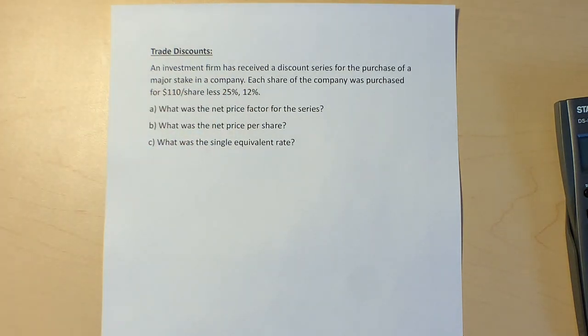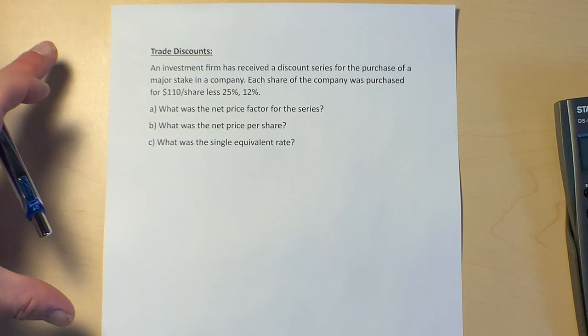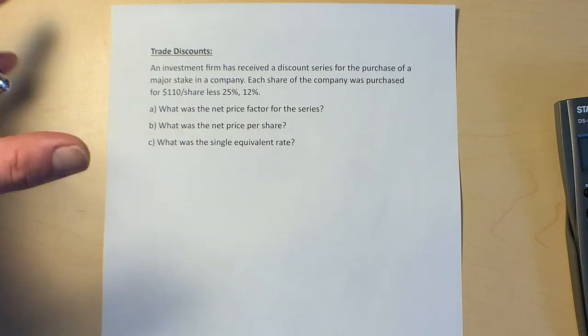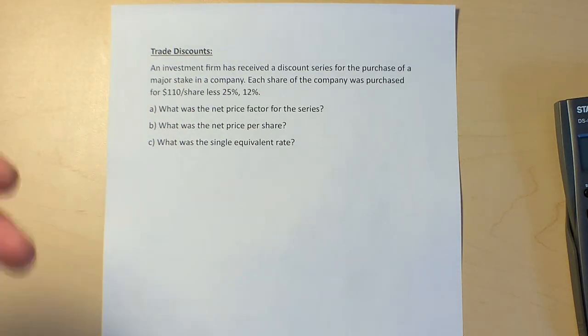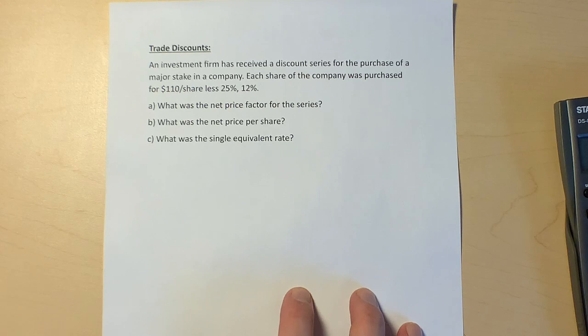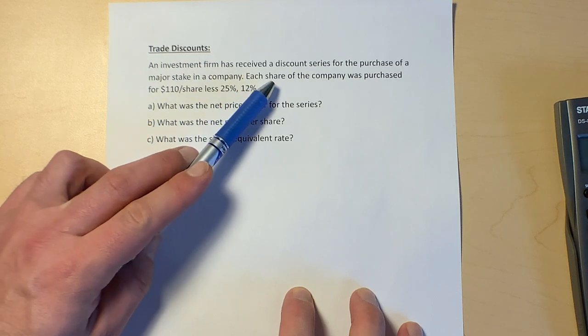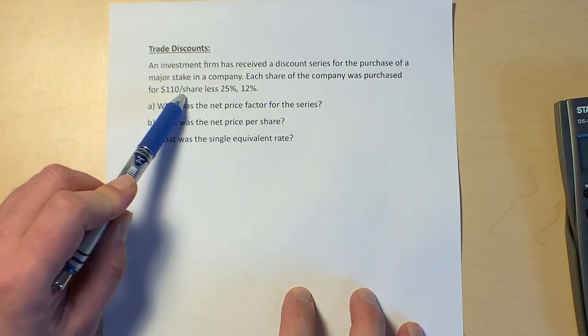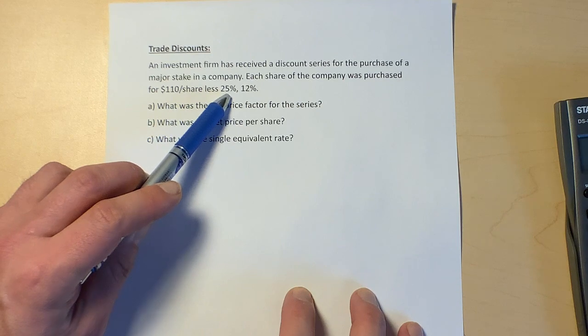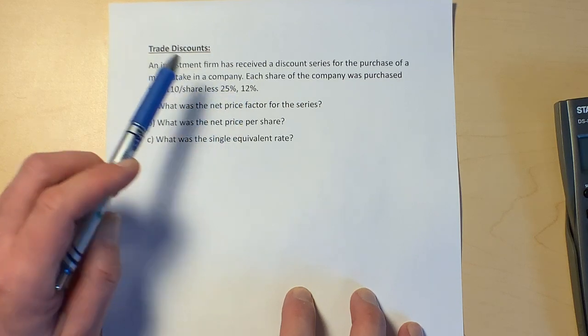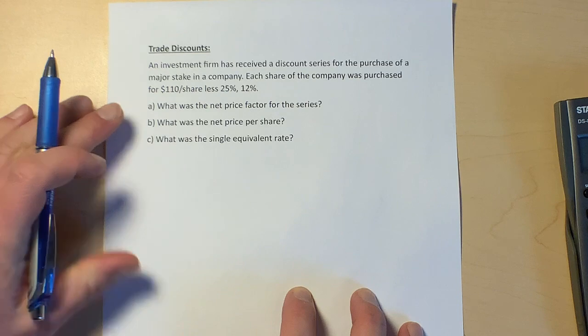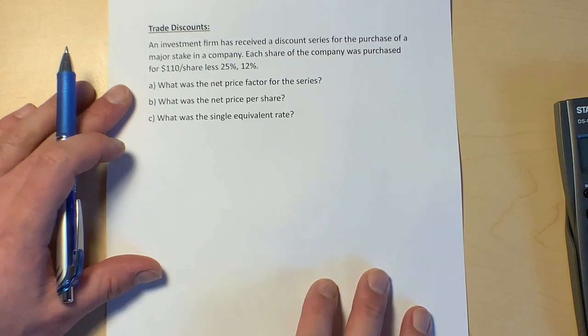So first of all, how do we do those discounts? And how do they translate into an equivalent rate? First, I'll show you how to do these questions. This question says: an investment firm has received a discount series for the purchase of a major stake in a company. Each share of the company was purchased for $110 per share less 25% and 12%—so less two discounts.